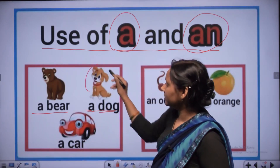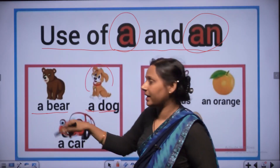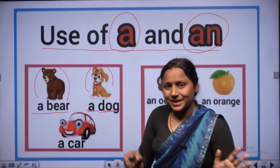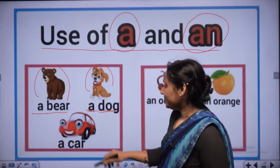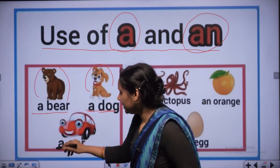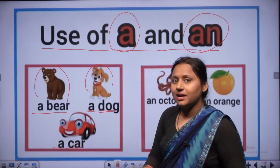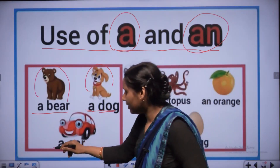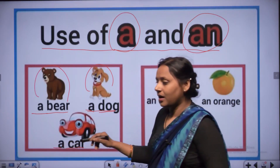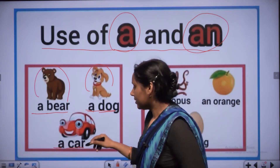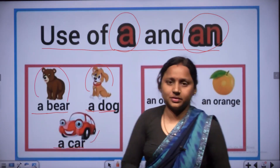This is the picture of a dog and this one is a bear. A - C, A, R - car. A car.